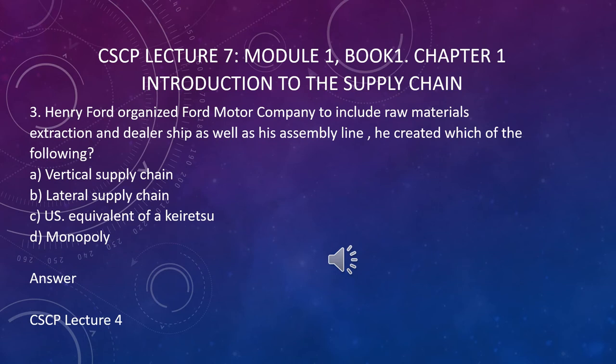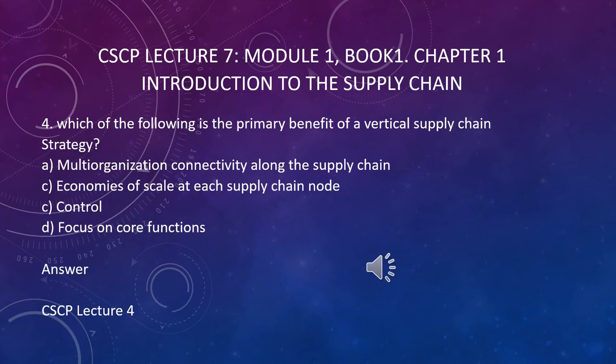Question number three: when Henry Ford organized Ford Motor Company to include raw material extraction and dealerships as well as his assembly lines, he created which of the following — a vertical supply chain or a lateral supply chain? The answer is the vertical supply chain, because a vertical supply chain involves managing your supplies from raw material to the end customers. You can check it from CSCP lecture 4.